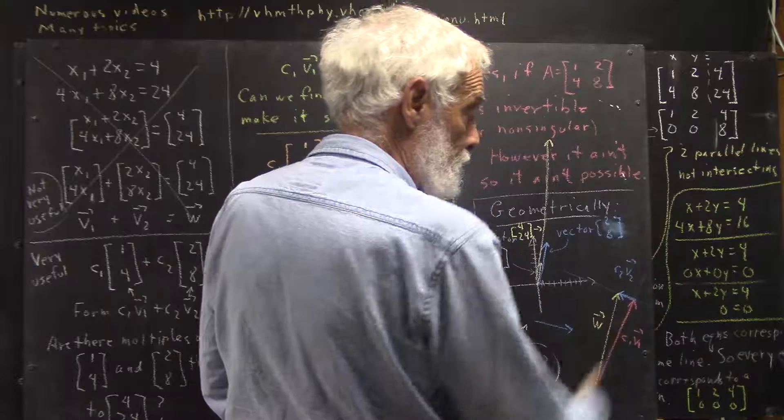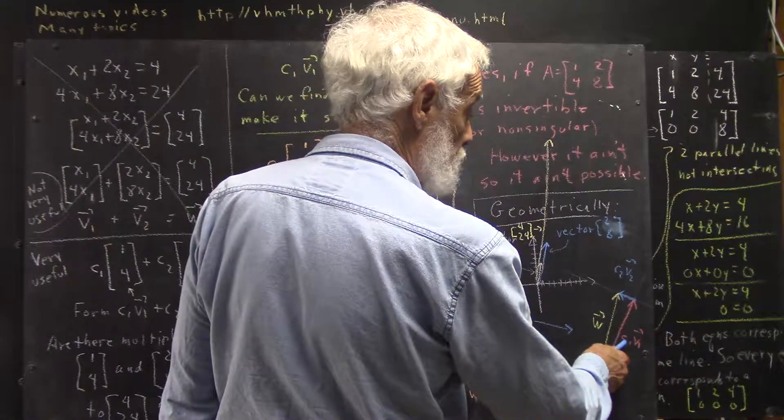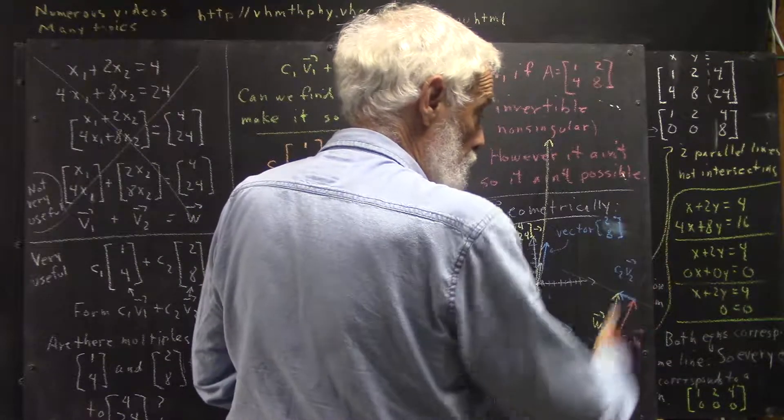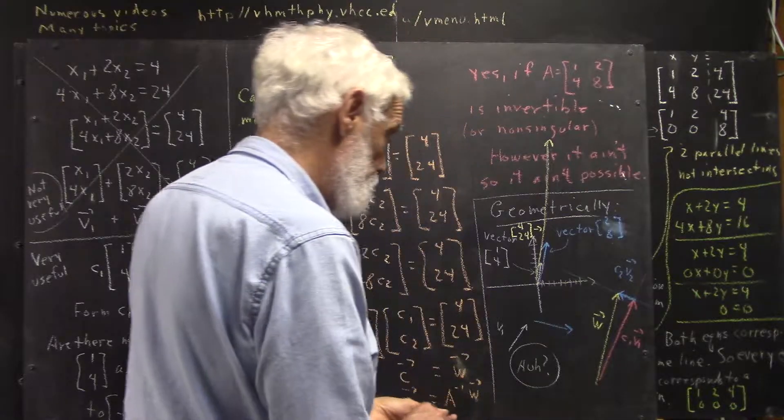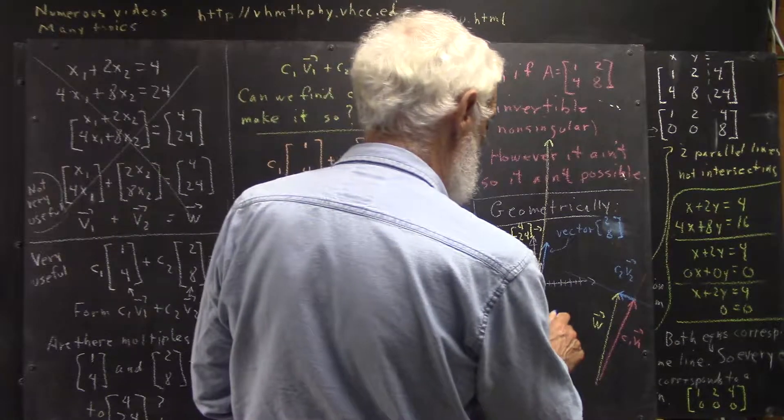If this is our v1, then any multiple of v1, any c1*v1, is going to lie along this line. And by choosing the right c1, we can have the vector lie anywhere along this line. And similarly with the vector v2.